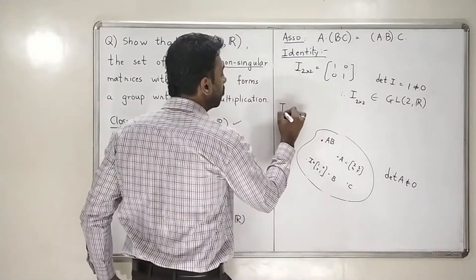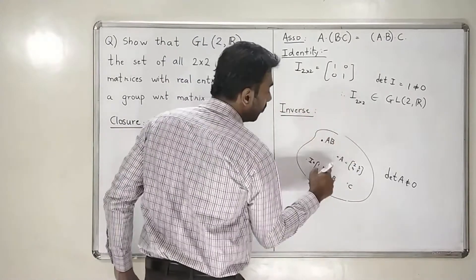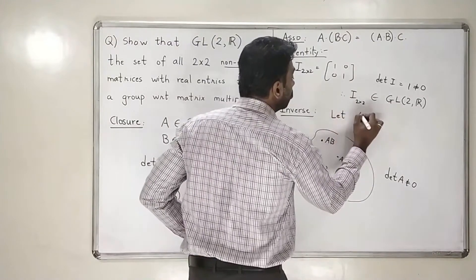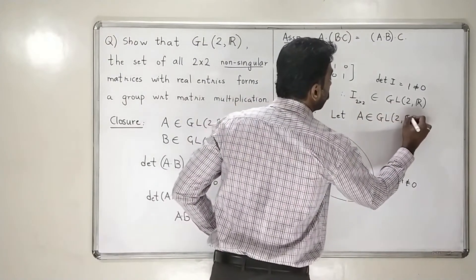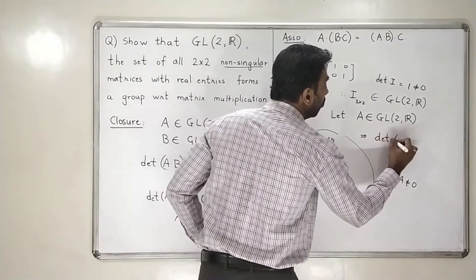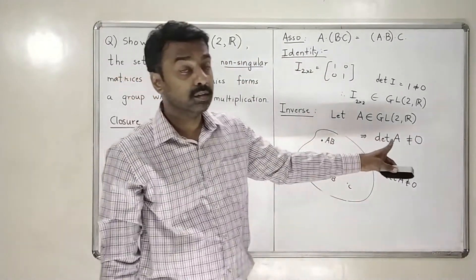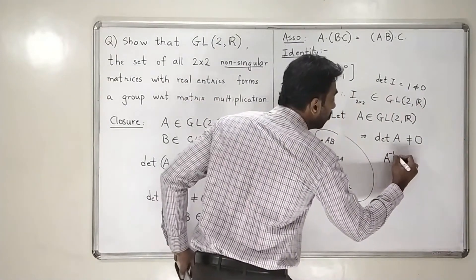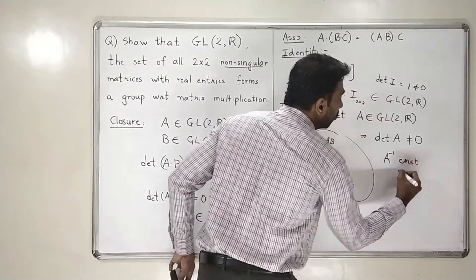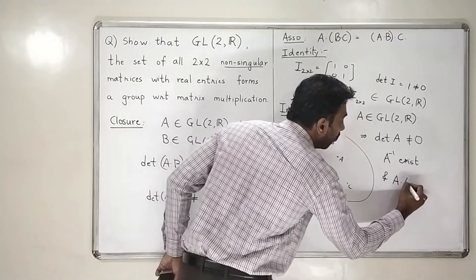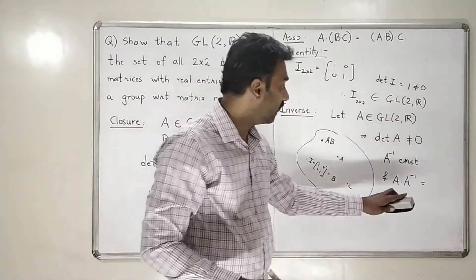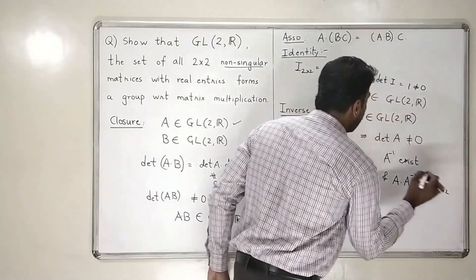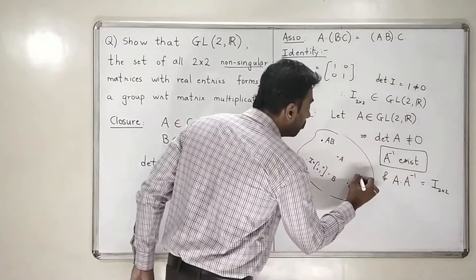Last but not the least, which is inverse. What is inverse? If I take any A which is in this set, obviously A has determinant not equal to 0. So let A belong to GL2R. This implies that determinant of A is not equal to 0. And we know that if the determinant of a matrix is not equal to 0, the inverse of that matrix always exists. So this means that A inverse exists. Now who is this A inverse? This A inverse is the matrix inverse. And A into A inverse should always equal the identity. So this A inverse will be my inverse element of the group, and that will also be inside the set.